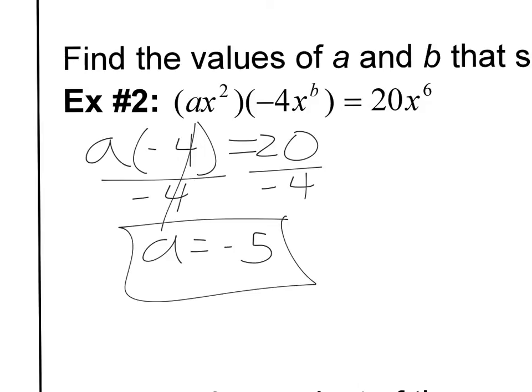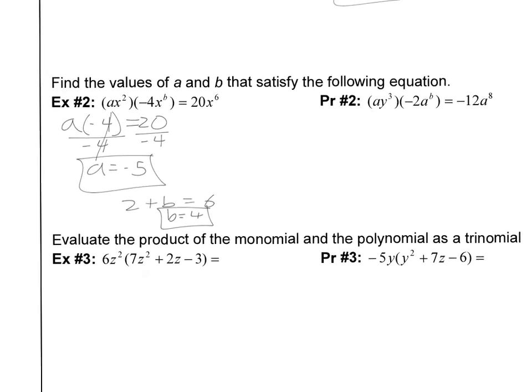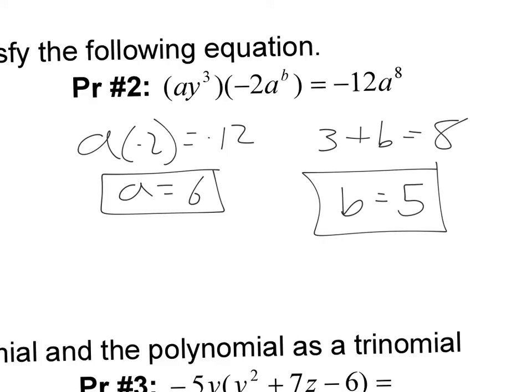Let's look at the variables — the exponents. I have 2, I have B, and I have 6. When the bases are the same, we just add the exponents. So 2 plus B equals 6, so B must be 4. Go ahead and try practice number 2. Hopefully you got A is 6 and B is 5.